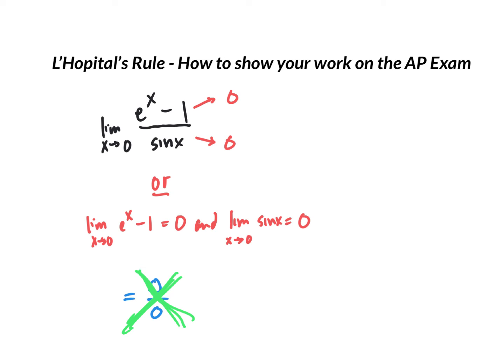In either one of these examples, either way that you like to write it, either the arrows to 0 or that the top equals 0 and bottom equals 0, after you've done that, you're going to write L'Hôpital. Spelling is not important on the AP exam, but you should write that you're going to do it. Then you should do it.